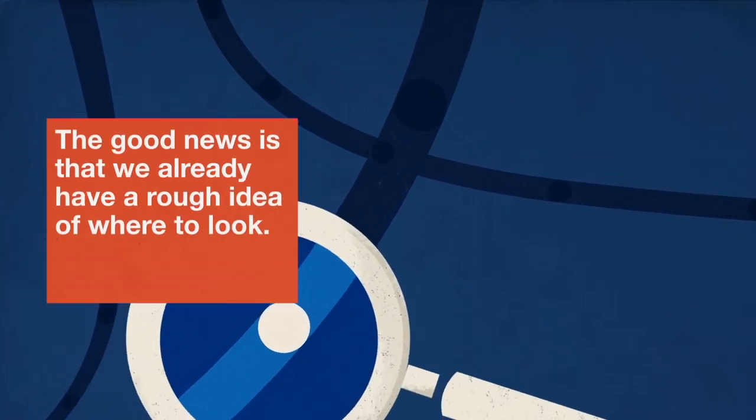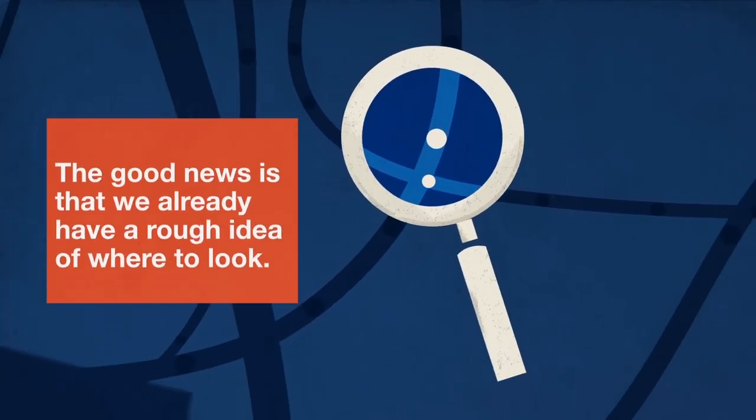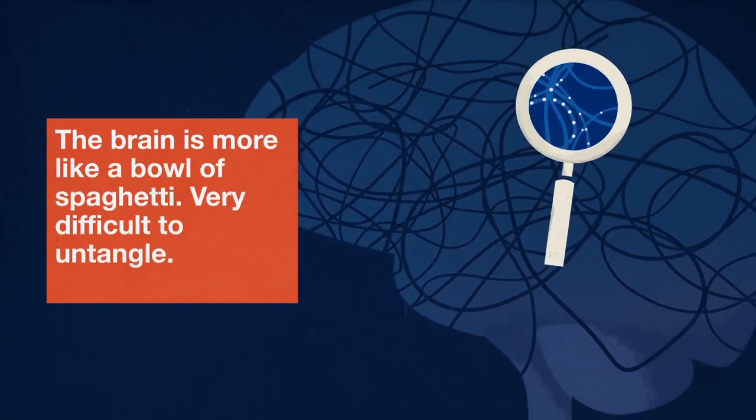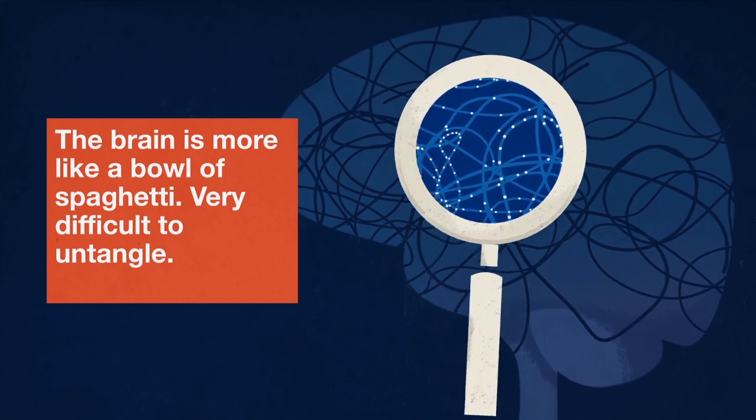The good news is that we already have a rough idea of where to look. But the bad news is that these brain regions are not just involved in sleep control. The brain is more like a bowl of spaghetti, very difficult to entangle.